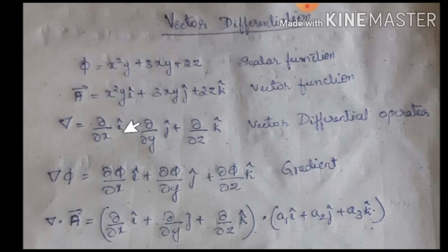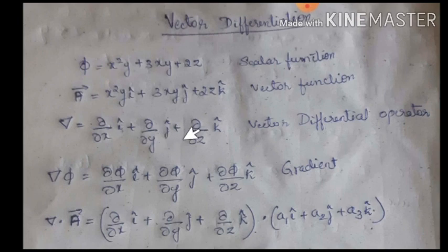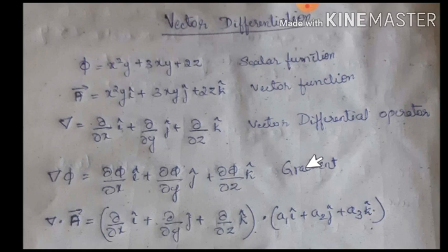Multiplying del into phi gives: partial derivative of phi with respect to x times i cap, plus partial derivative of phi with respect to y times j cap, plus partial derivative of phi with respect to z times k cap. This is defined as the gradient. Gradient of a scalar function results in a vector function, so the answer should always be in vector form.